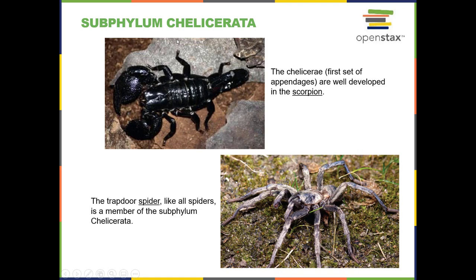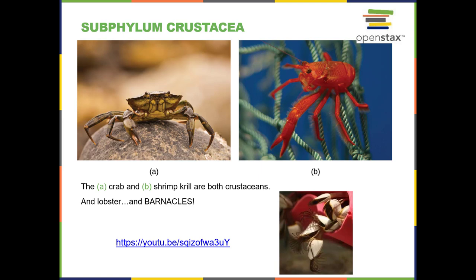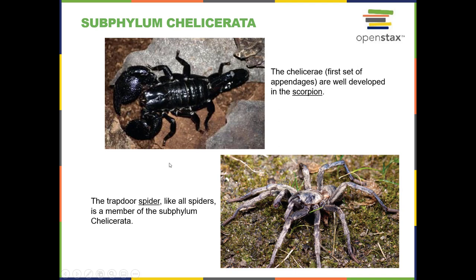The Chelicerata include things like scorpions, spiders, and horseshoe crabs. That last one is a misnomer, because a horseshoe crab is not a true crab — true crabs belong in the crustaceans. A horseshoe crab is actually a Chelicerata, more closely related to a spider or a scorpion.